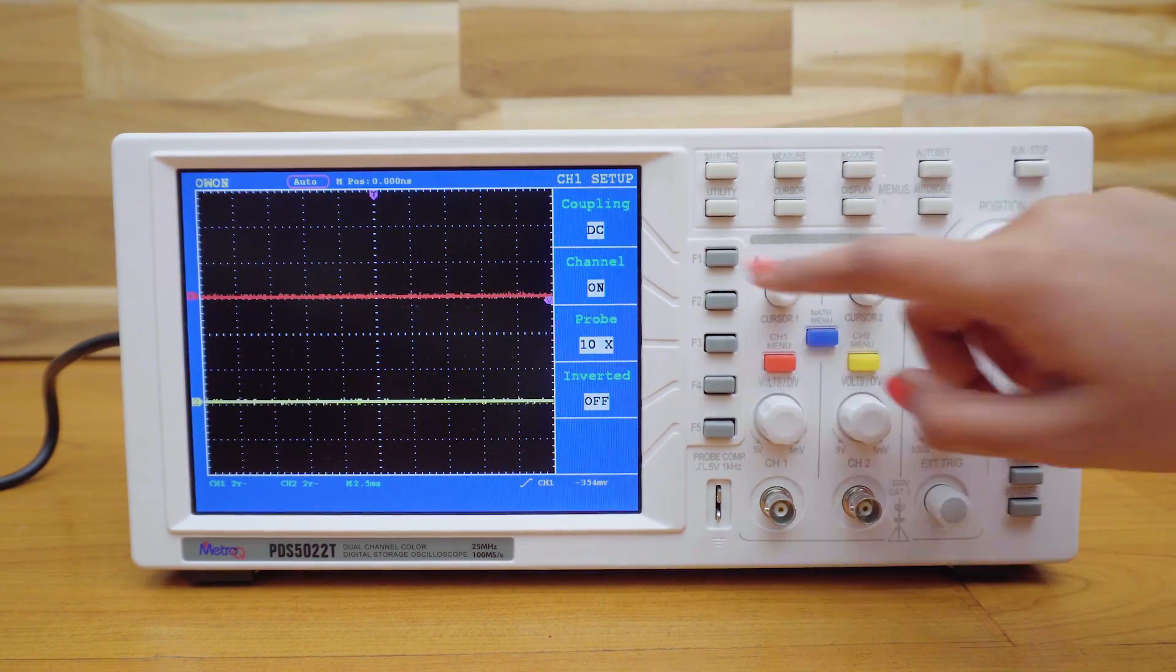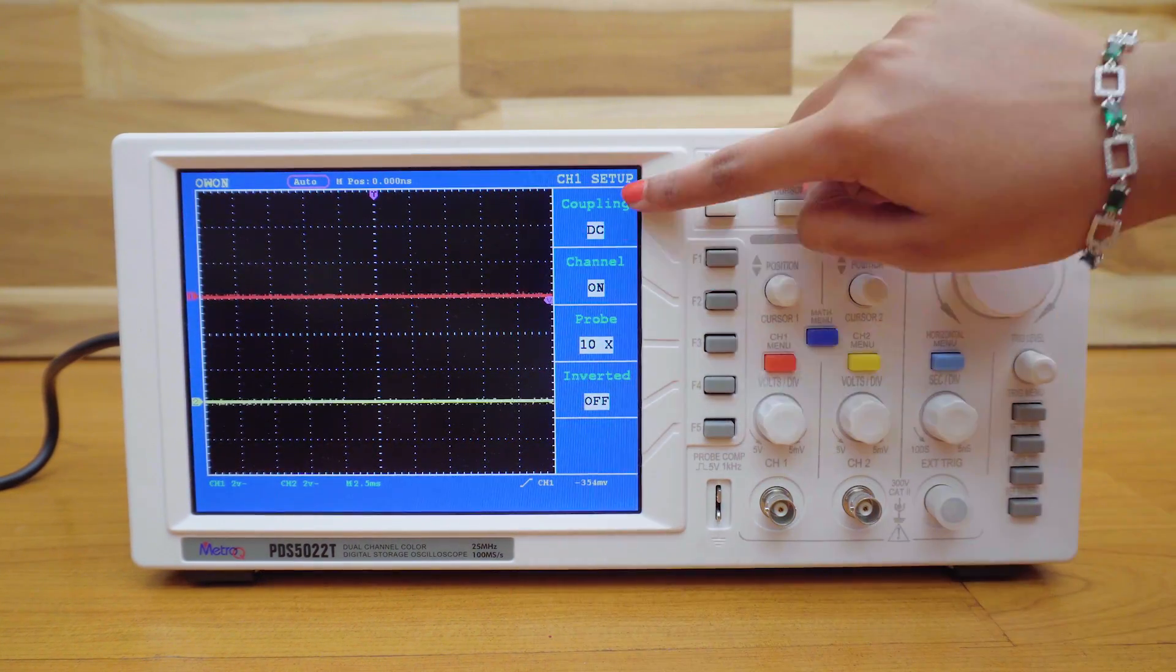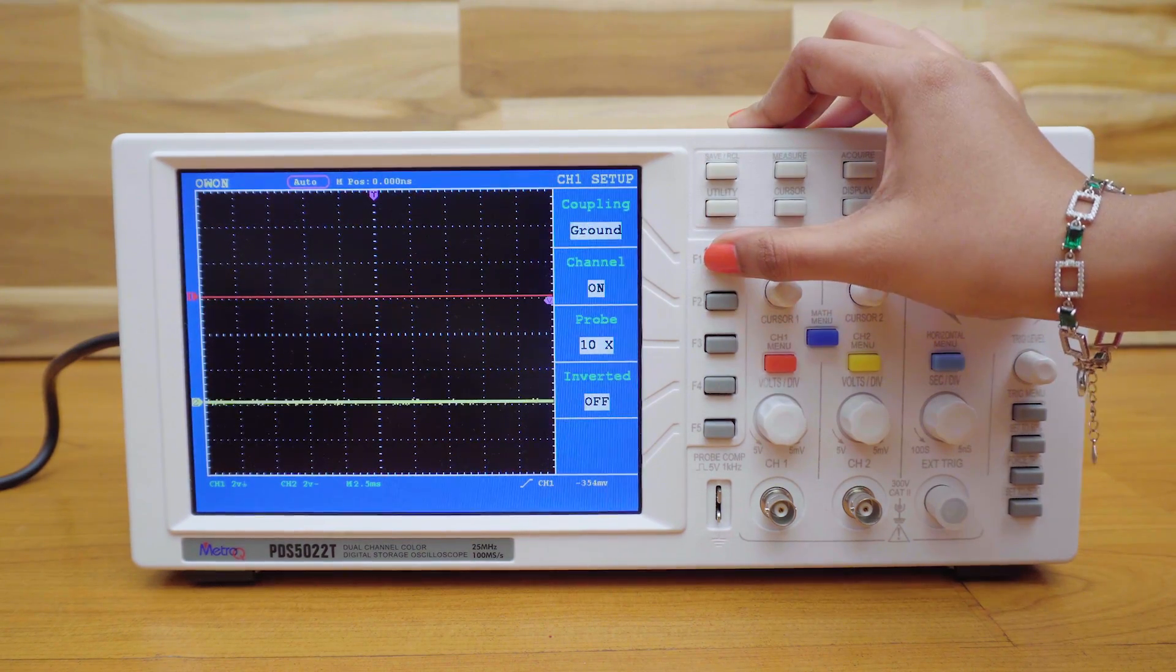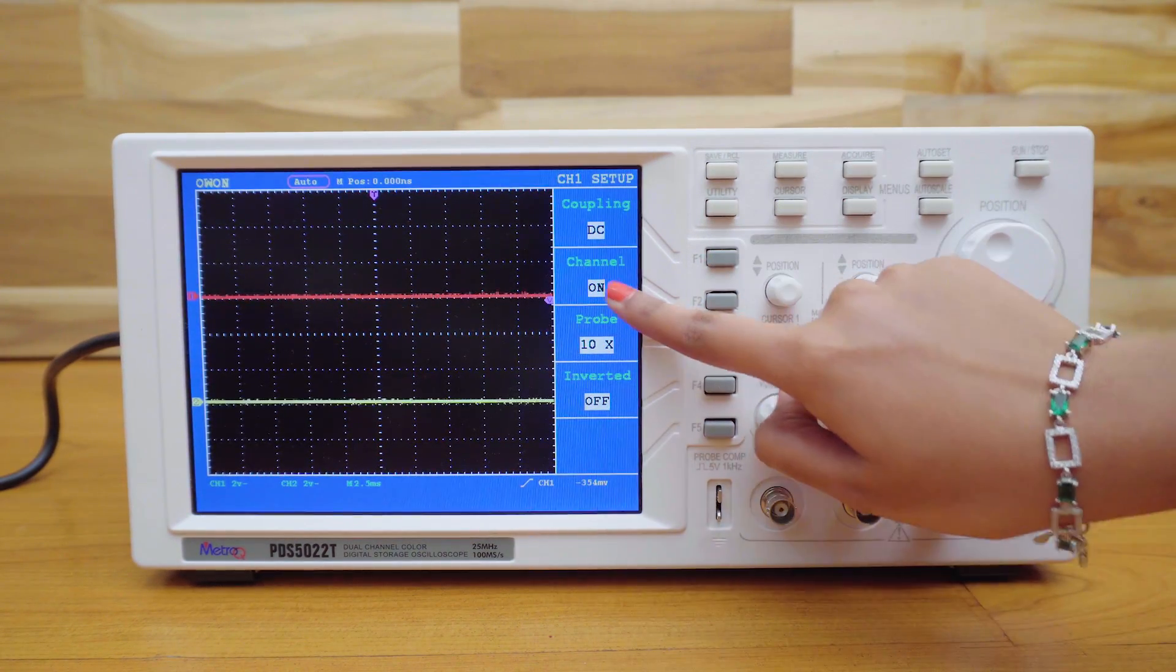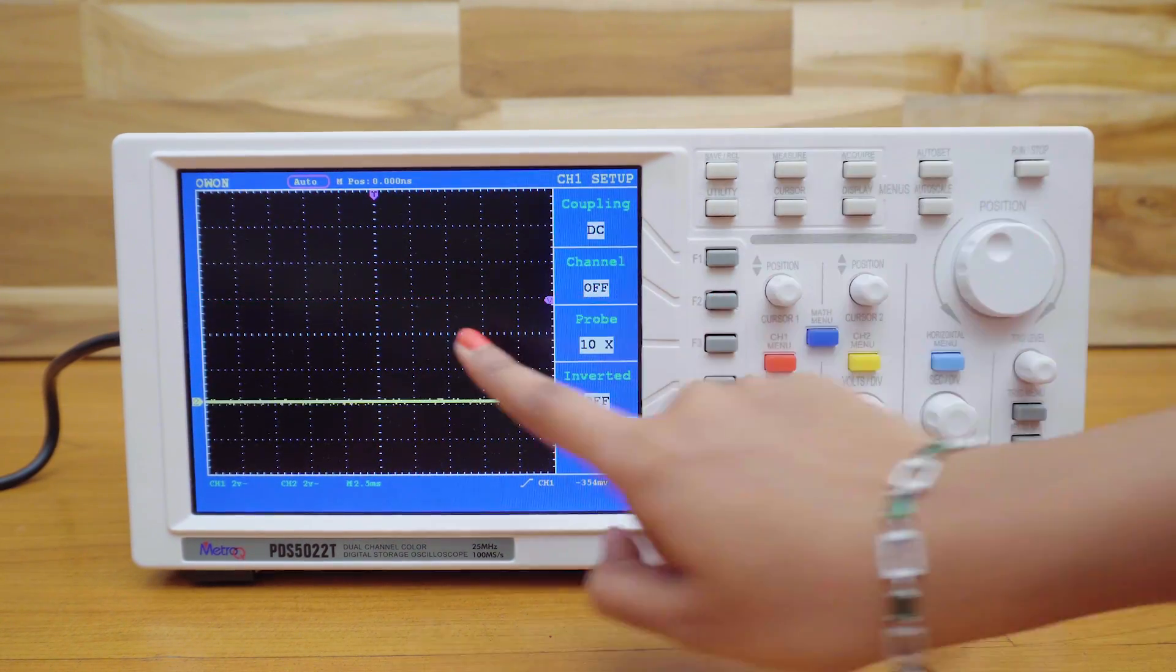Now let's see the menu of the oscilloscope. This is channel 1 menu. Here is the input coupling, you can change it to DC, AC or ground. This is the channel 1 on-off button.